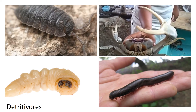Another way that decomposition is sped up in the natural environment is by the action of what we call detritivores. Detritivores are creatures that obtain nutrients by consuming detritus. Detritus is basically decomposing plant and animal material and feces. Detritivores that feed on dead plants are things like millipedes and woodlice, and ones that feed on dead animals are things like maggots and beetle larvae, or in a marine environment, something like a fiddler crab.